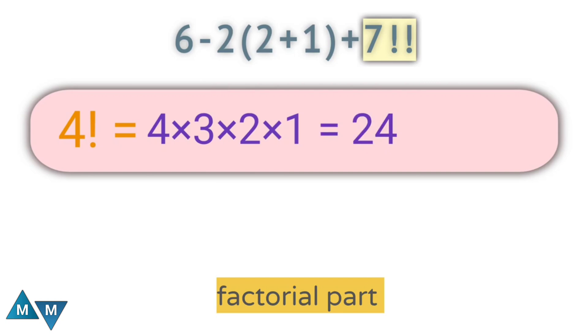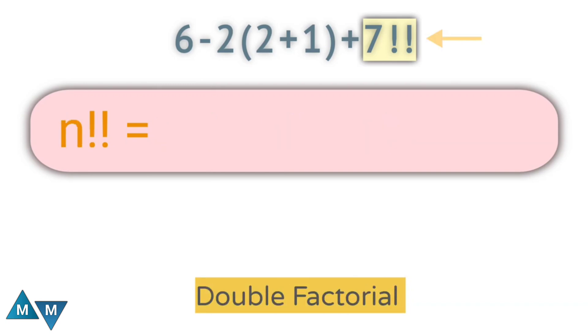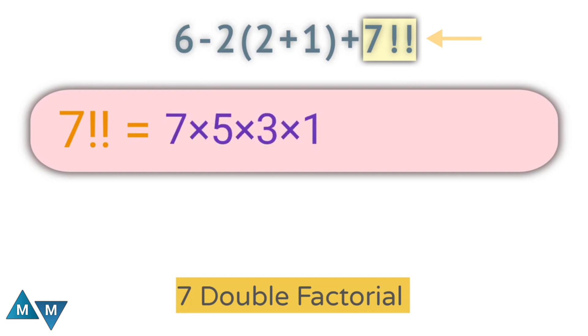But here we have double factorial. Now the double factorial of a number n is the product of all the positive integers up to n that have the same parity as n. For example, 7 double factorial can be written as 7 times 5 times 3 times 1, which equals 105.